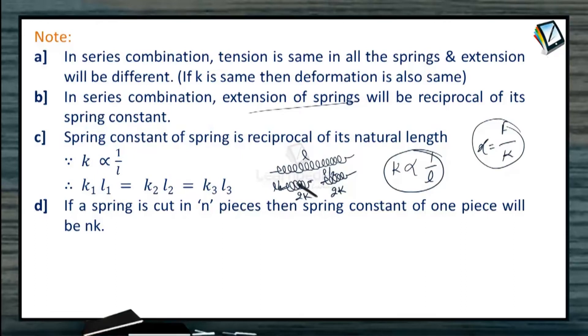So if one spring is cut in several parts, say M parts, then spring constant of each one will become M times K.